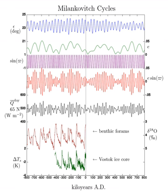Its orbital velocity is highest around perihelion and lowest around aphelion. The Earth spends less time near perihelion and more time near aphelion. This means that the lengths of the seasons vary.